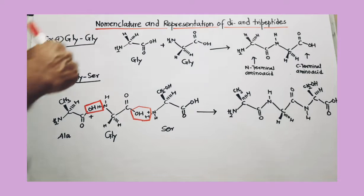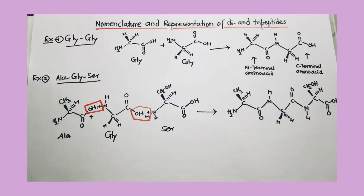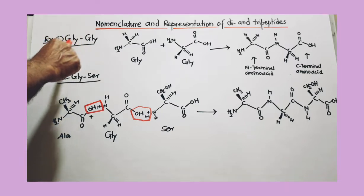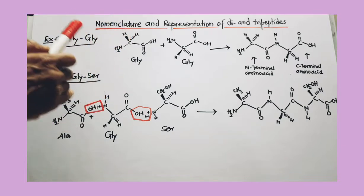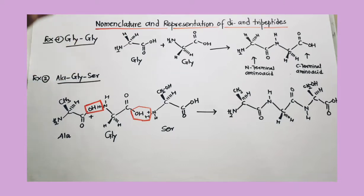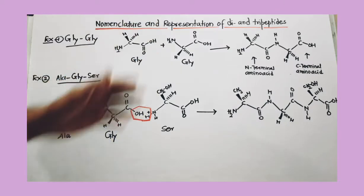Now let's see how nomenclature is given to di and tripeptides. Suppose GLY-GLY is written and we are asked to draw the dipeptide. First, you must know what GLY means and what its structure is. You should know the structures and abbreviations used for all 20 amino acids. All structures and three-letter abbreviations are given in my previous videos — please watch that video before watching this one.